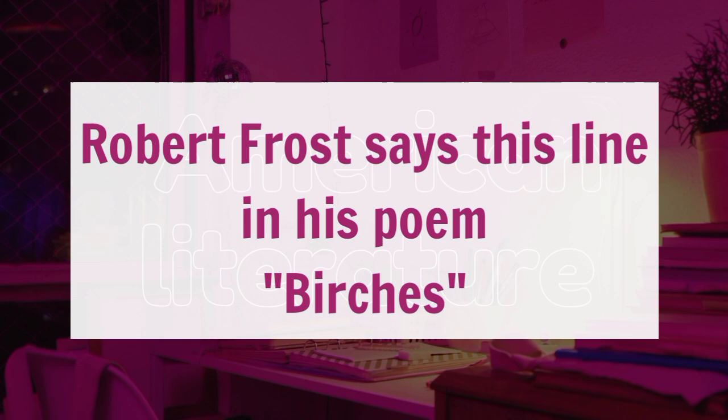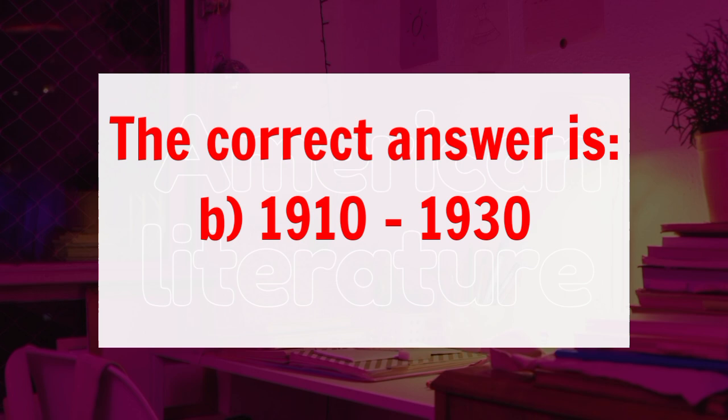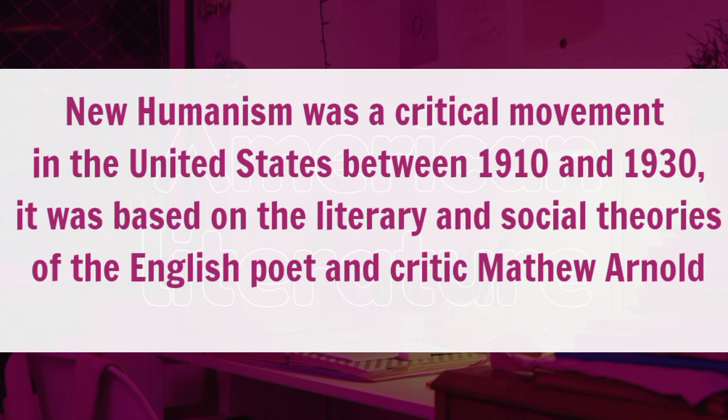Question 18: the New Humanism School of Philosophy and Literary Criticism was popular in America during? Option A, 1920 to 1940. B, 1910 to 1930. C, 1930 to 1940. D, 1900 to 1910. Here the correct answer is Option B, 1910 to 1930. New Humanism was a critical movement in the United States between 1910 and 1930. It was based on the literary and social theories of the English poet and critic Matthew Arnold.